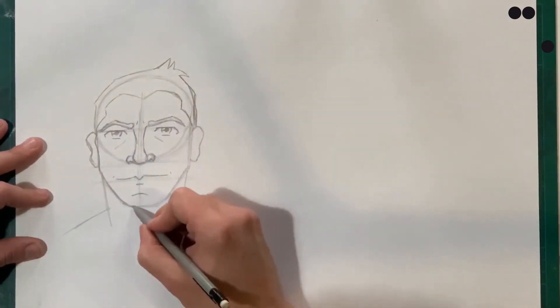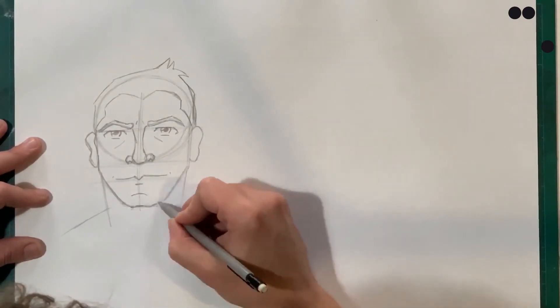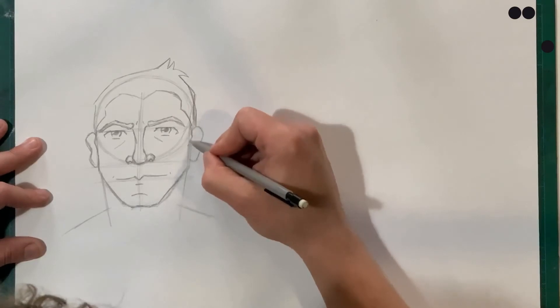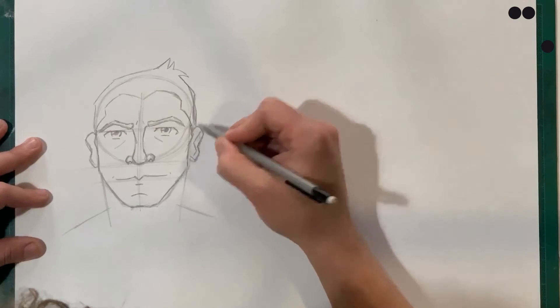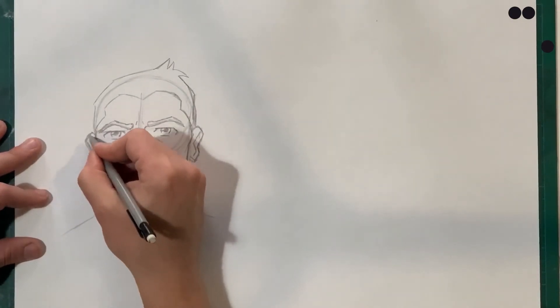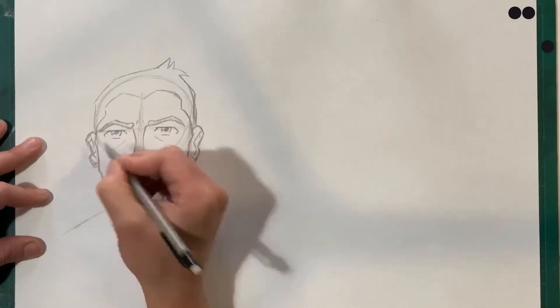And as we go through we just add more and more details, more and more lines to define the side of the face and the jaw a little bit more. Ultimately we just build up layers of shapes and lines until we have a human face. Quite simple to follow along with.